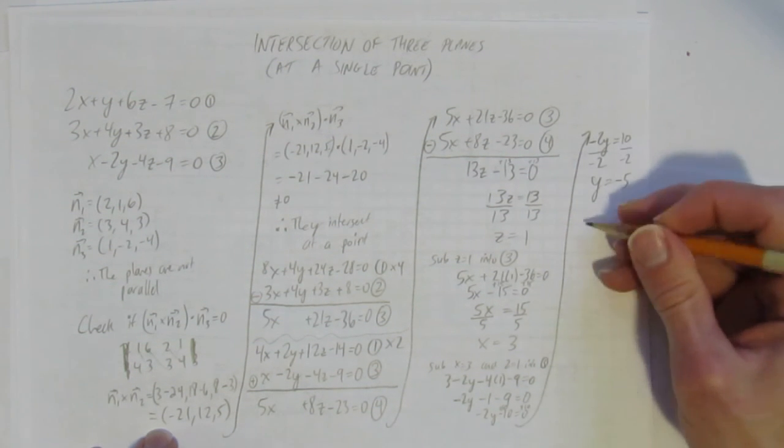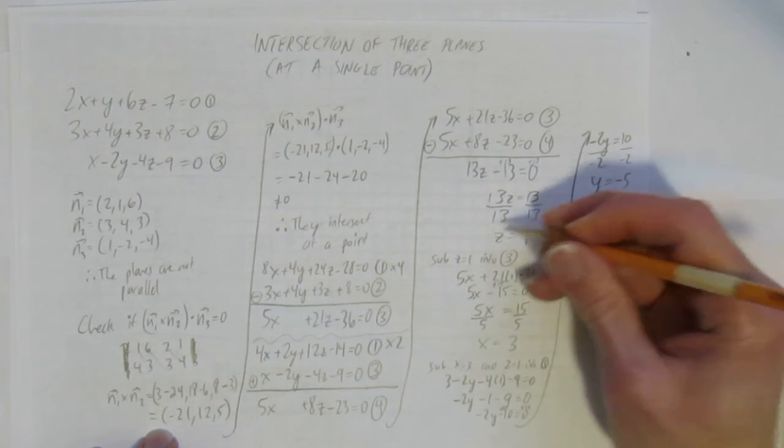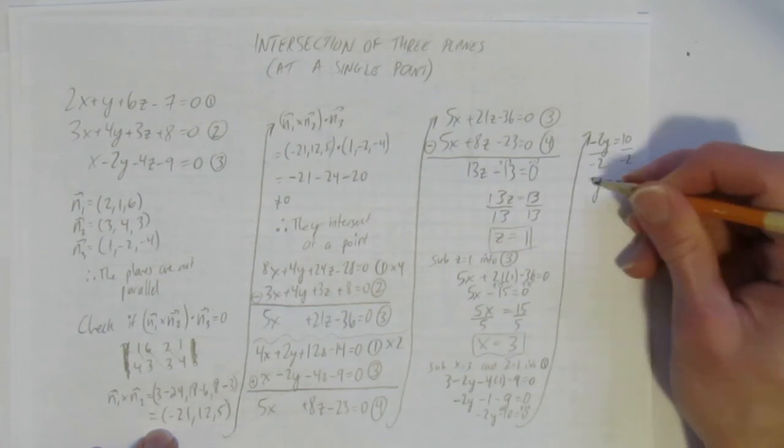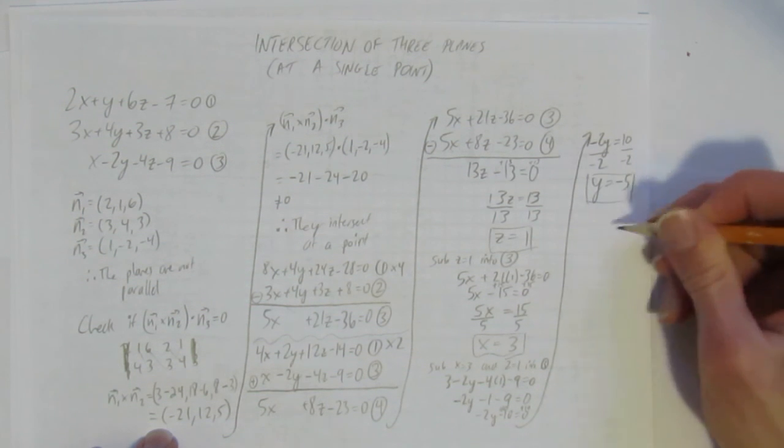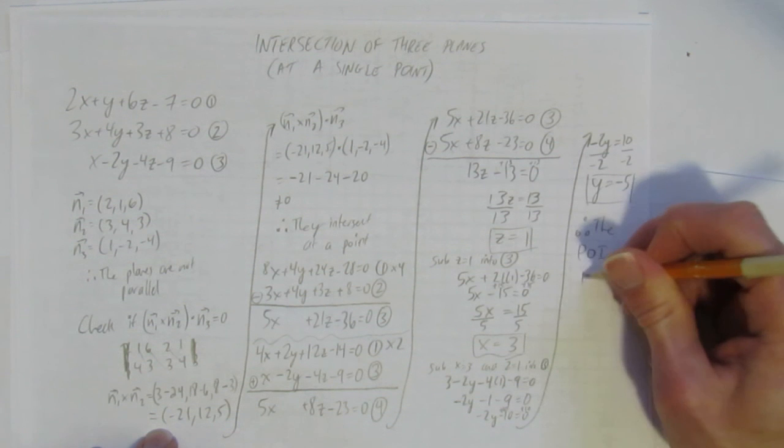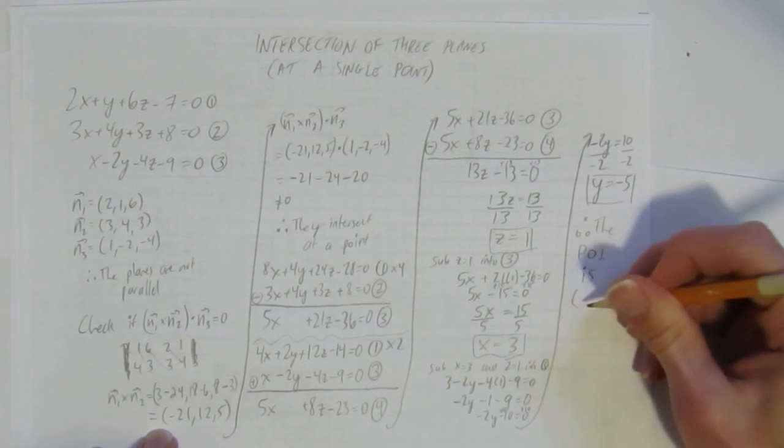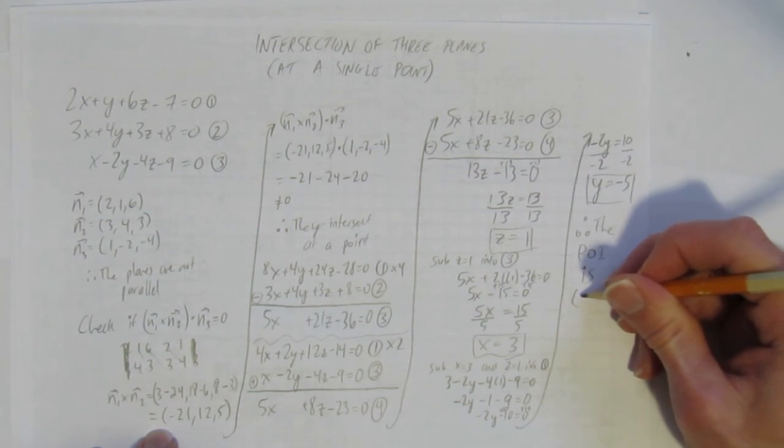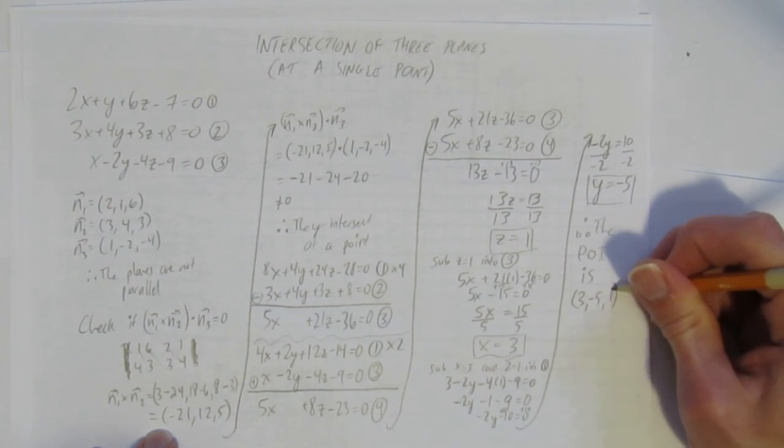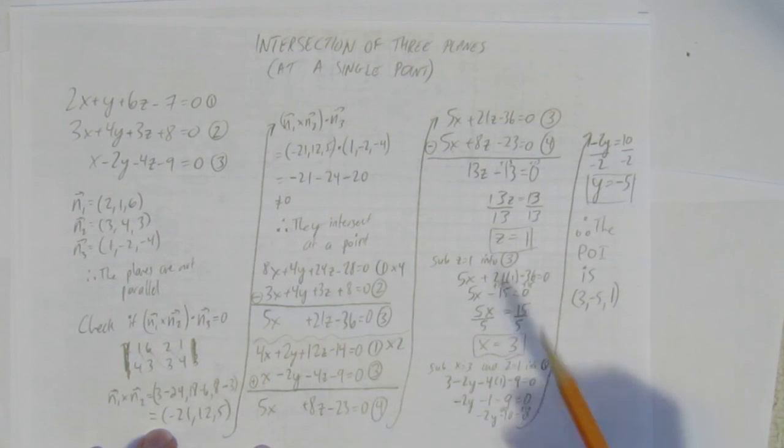And I'm going to squeeze in my final answer in the column here. As my final answer is a point made up of this z, this x, and this y. Therefore, the point of intersection is, I can write it as a point coordinate, x, y, z, (3, -5, 1). I'm done. Whew.